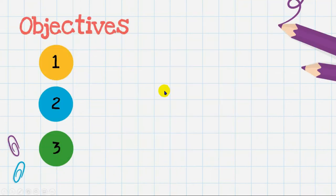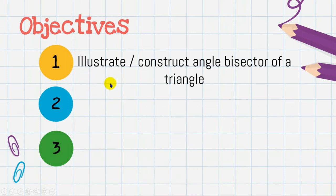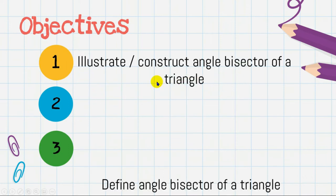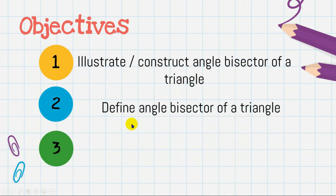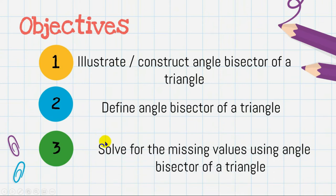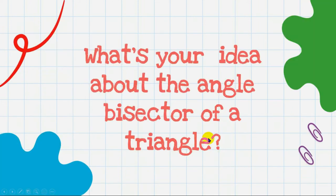For this video, here are our objectives. First, we have to illustrate and construct angle bisectors of a triangle. Second is to define angle bisectors of a triangle. Third is to solve for missing values using angle bisectors of a triangle. Let's begin our discussion with this question: what's your idea about the angle bisector of a triangle?